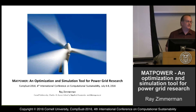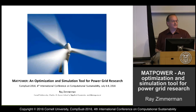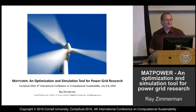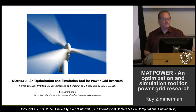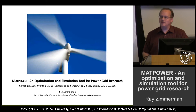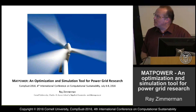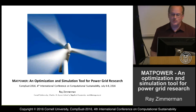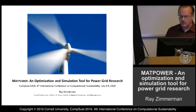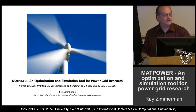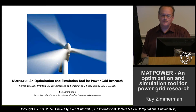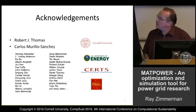This morning Warren talked about stochastic optimization problems in energy and electricity. I'll be talking about a specific tool, MAP Power, that can be used to simulate and optimize electric power.